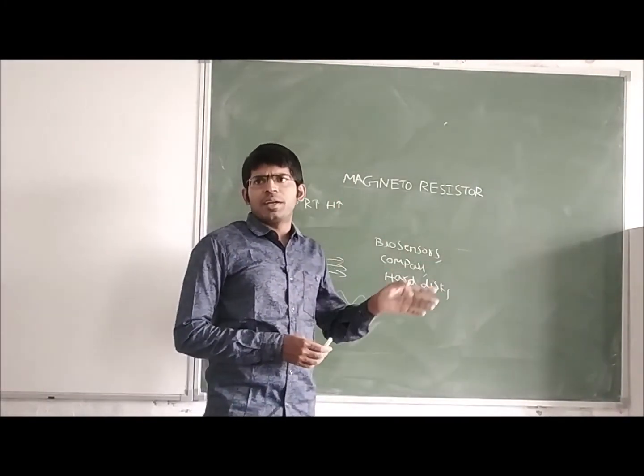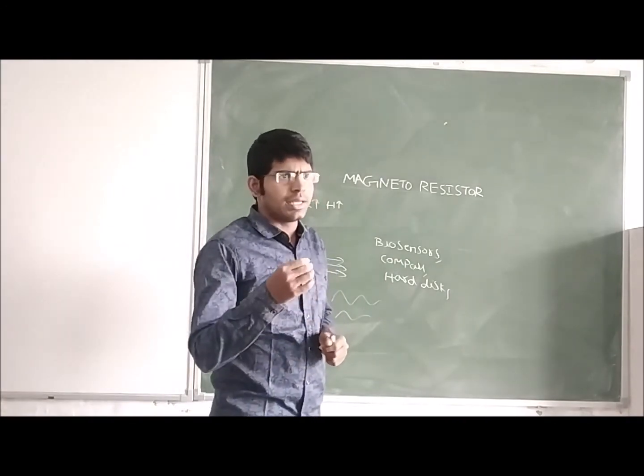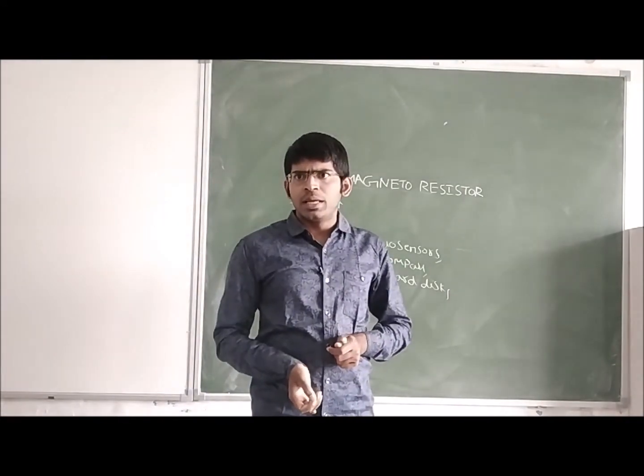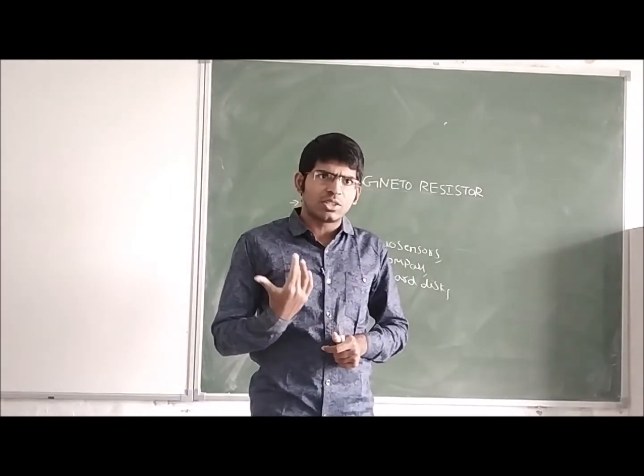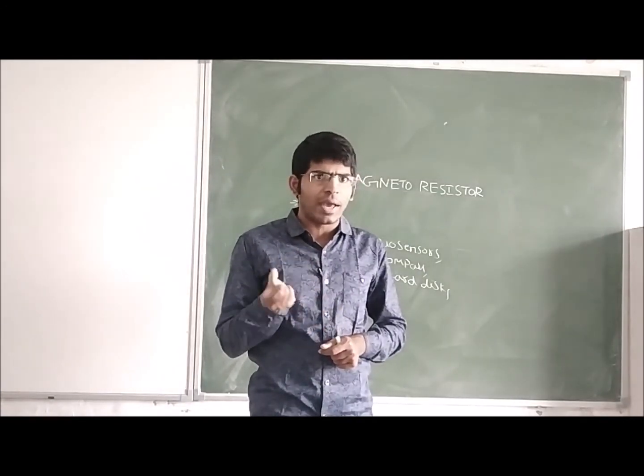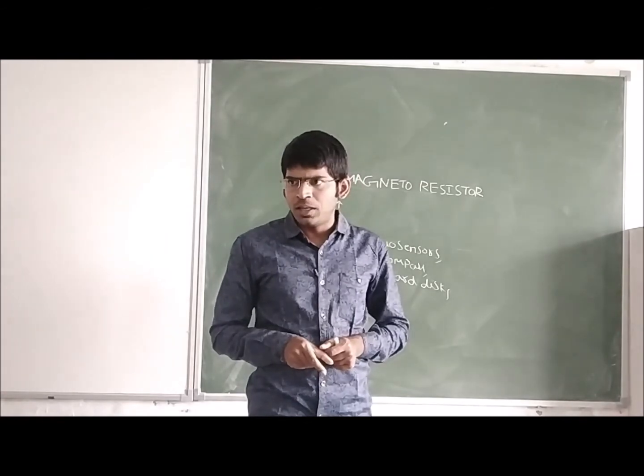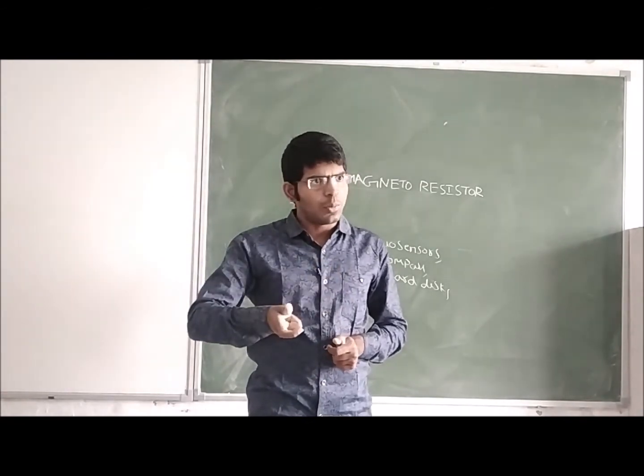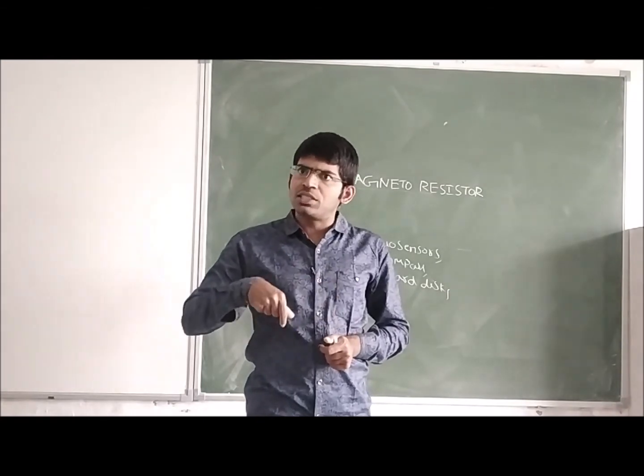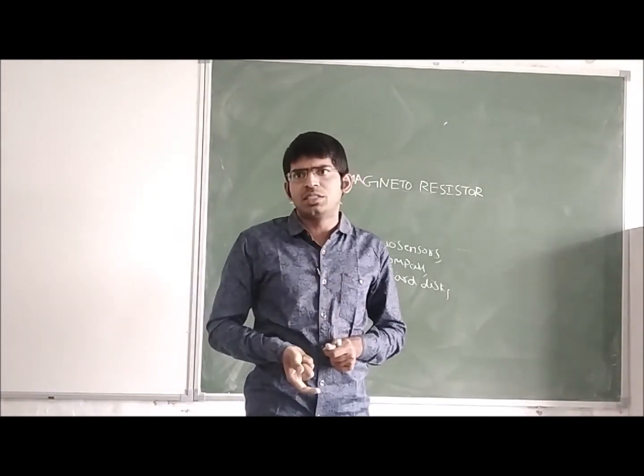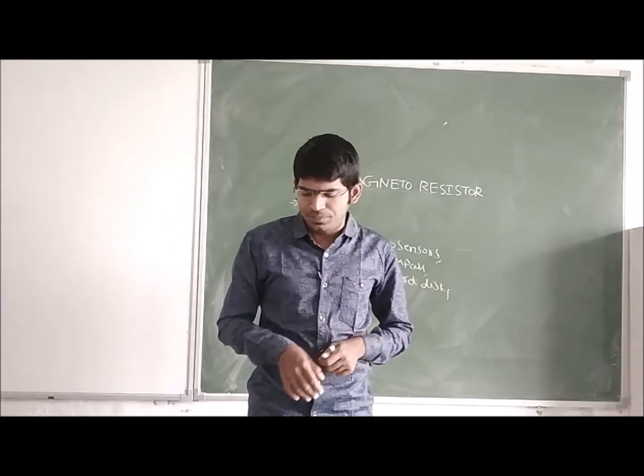This magnetoresistive effect was first introduced by a scientist named William Thompson. He discovered that there is a possibility that we can change the resistance value of a resistor by using the magnetic field. If we vary the magnetic field by some amount, the equivalent resistance of a resistor can be changed. That was discovered by William Thompson.